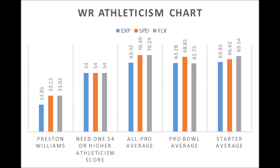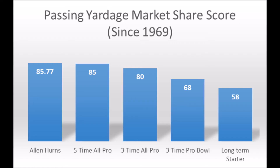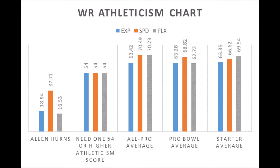When it comes to comps — and this is something I'll be doing this year, production comps and athleticism comps — one player that came up as an ideal comparison was Alan Hearns, a wide receiver who played for the Jacksonville Jaguars and Dallas Cowboys. Hearns had an 85.77 production score, very close to Preston Williams. Hearns was actually a worse athlete than Williams — very similar explosion and speed scores — but Williams was more flexible. And Alan Hearns has been a successful wide receiver.